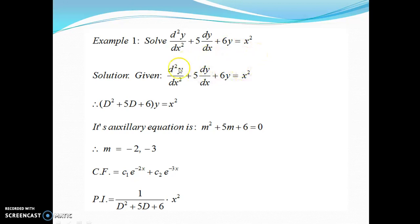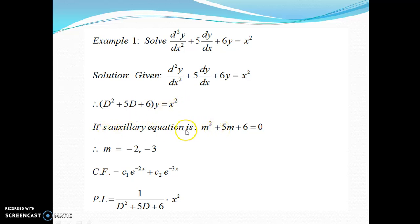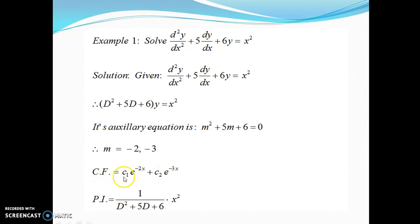Writing in terms of D notation, where D stands for d/dx: D²y + 5Dy + 6y = x², or (D² + 5D + 6)y = x². Now we write down the auxiliary equation by putting D = m: m² + 5m + 6 = 0. Solving this we get m = −2, −3. As the roots are real and unequal, it falls under the first condition of complementary function, so CF = C₁e^(−2x) + C₂e^(−3x).